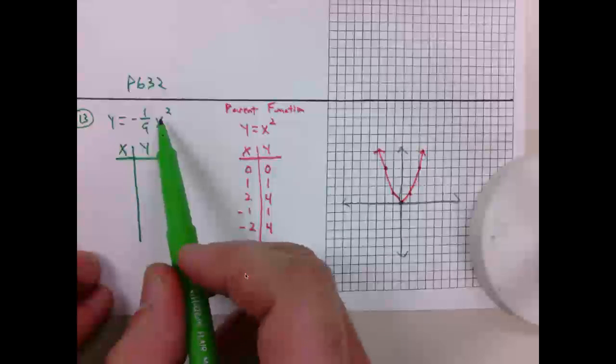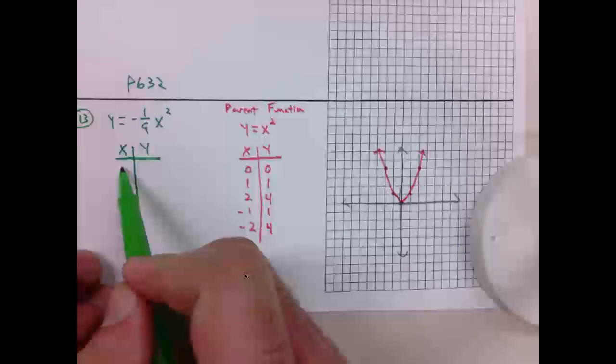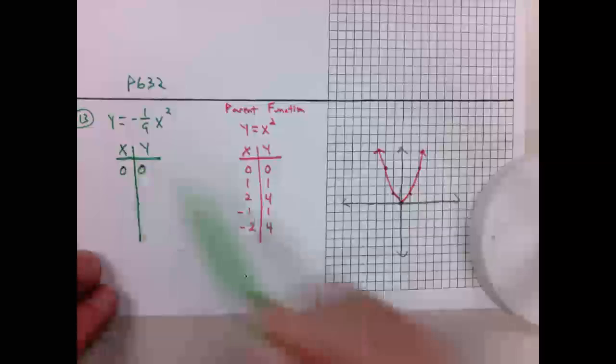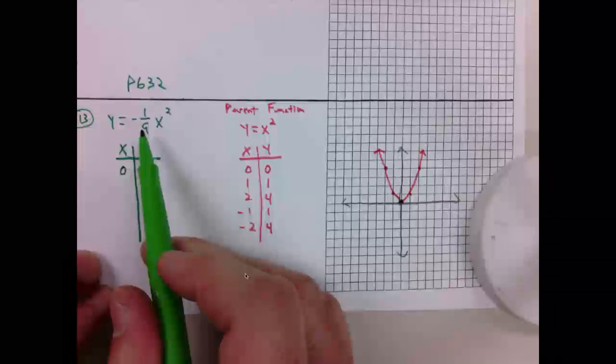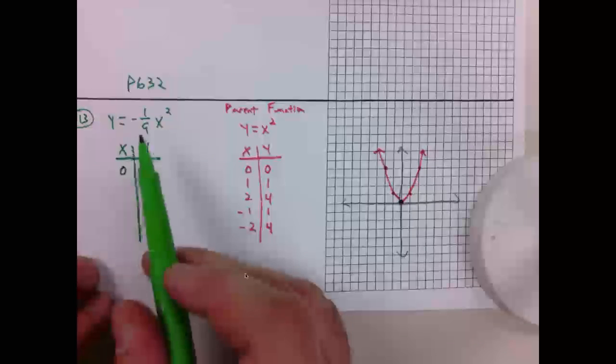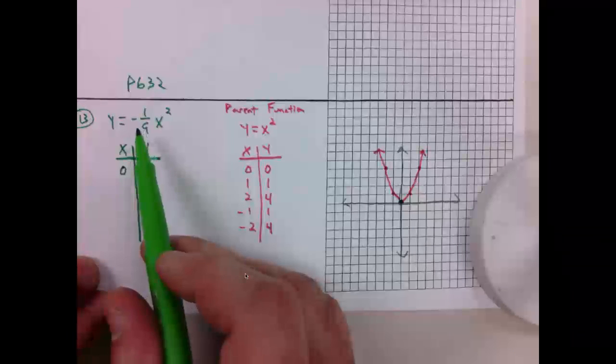I know 0 is still going to pair with 0. Since this is negative 1/9, I anticipate it's going to be really wide because a is small and it's going to open downward. So this new parabola should be wider than my red one and should open downward.